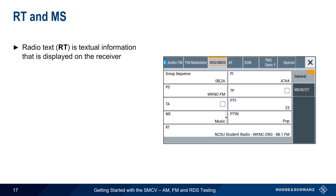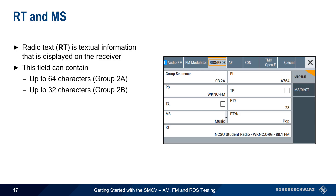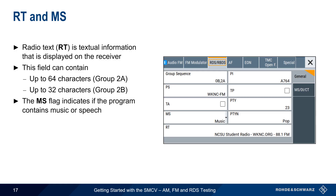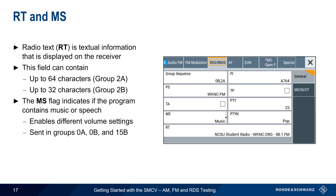Another parameter commonly displayed on receivers is Radio Text. This is a field containing either 64 or 32 alphanumeric characters, most often used to display things such as station name, song and/or artist name, websites, phone numbers, and even advertisements. Another common parameter is the MS flag, which indicates if the program is music or speech. The purpose of this flag is to allow receivers to switch volume settings based on the type of audio being broadcast. MS can be transmitted in groups 0A, 0B, and 15B.